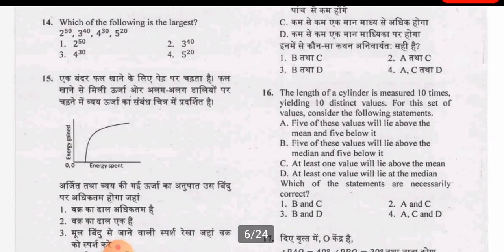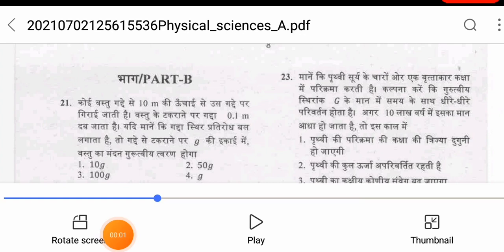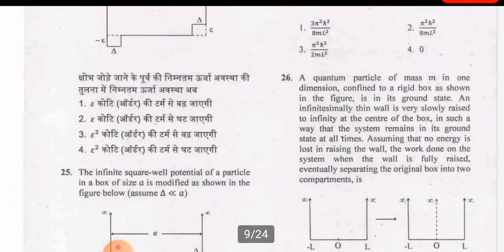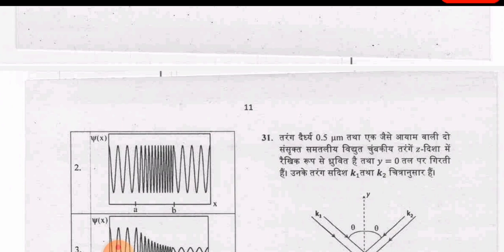In Part B, questions carry 3.5 marks each with negative marking, and the whole section is 70 marks. The answers are provided in both Hindi and English, but if you have selected the English option you will get the answers in English.